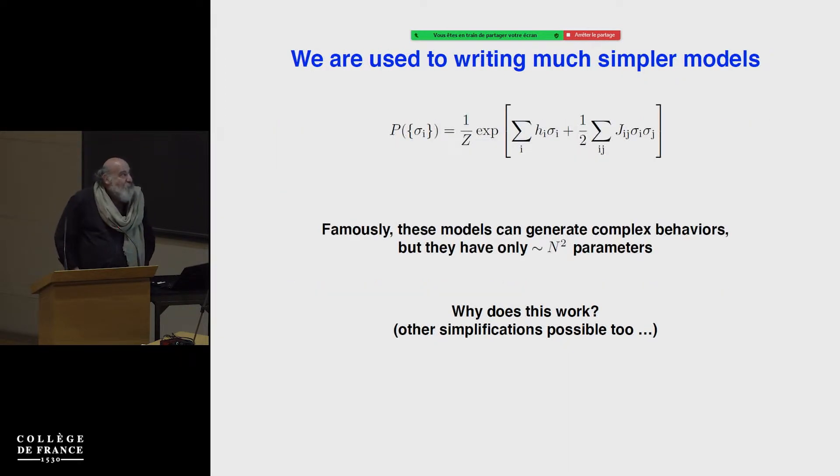And indeed, we're used to the idea that we can write down vastly simpler models. So when we write down an Ising model for these binary variables, in which each one is influenced by an external field that biases you between the two binary choices, and the binary variables interact with each other in pairs, although with proper choices this class of models could be paradigmatically complex, in fact, it's vastly simpler than it could be because there's only order n squared parameters here, not two to the n. So why does this work?